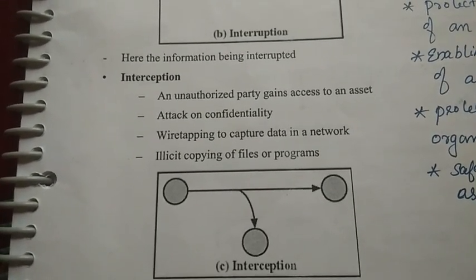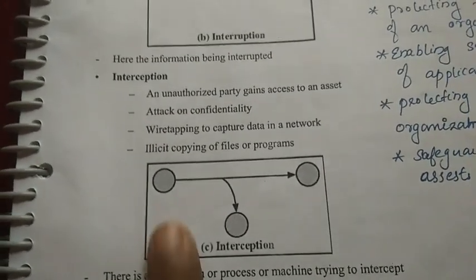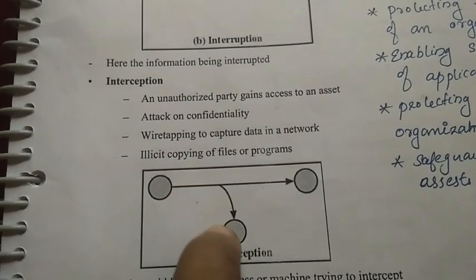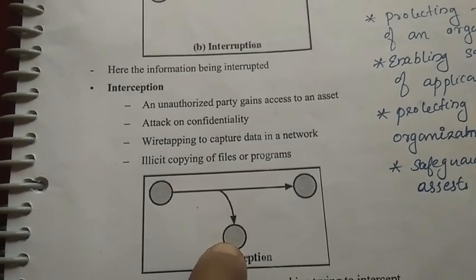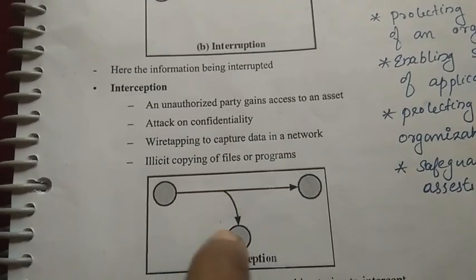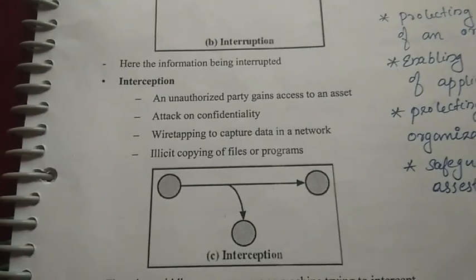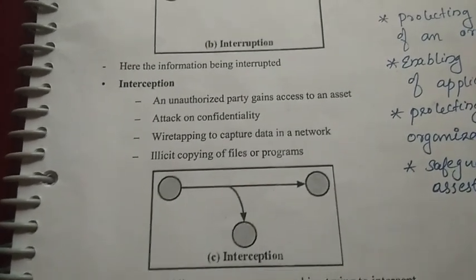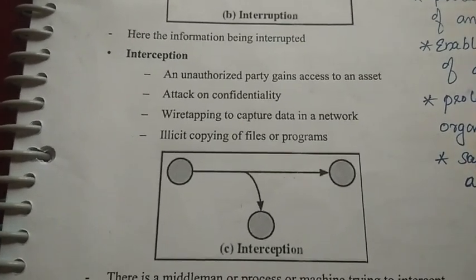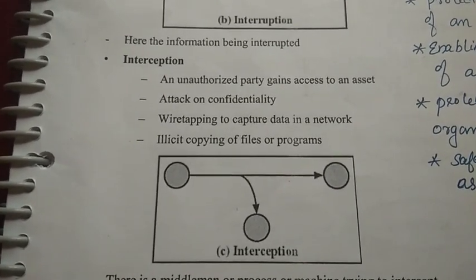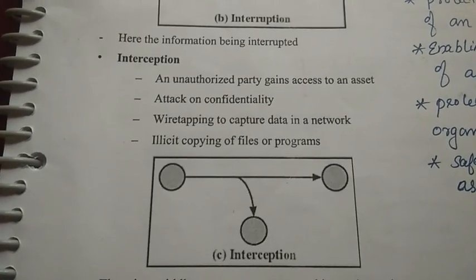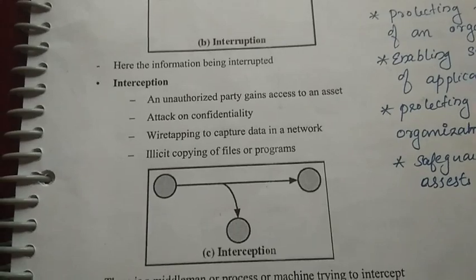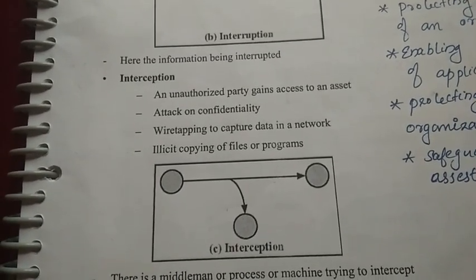In an interception scenario, there is a sender and receiver with a communication line. An example is wiretapping to capture data in a network — where a source system and destination system communicate and wiretapping is performed on the communication line to read the data.